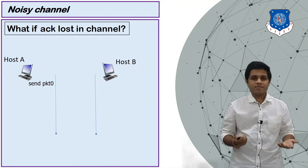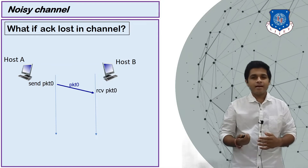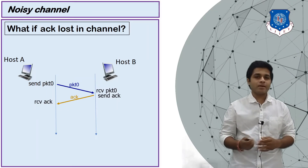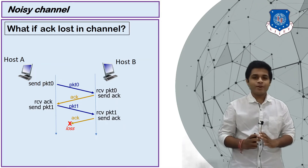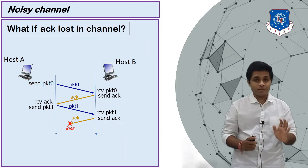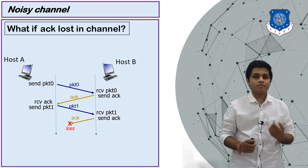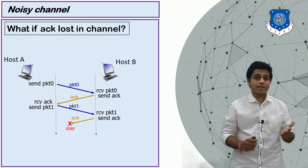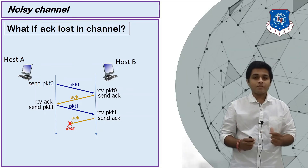Now suppose the acknowledgement is lost instead. A sends packet 0, B receives it and sends an acknowledgement; A receives it, then sends packet 1, B receives packet 1 and sends an acknowledgement — but this acknowledgement is lost in the channel. B doesn't know its acknowledgement is lost, so B is waiting for packet 2. A is waiting for the acknowledgement so it can send the next packet. Again both devices are stuck in infinite waiting, creating a communication problem.